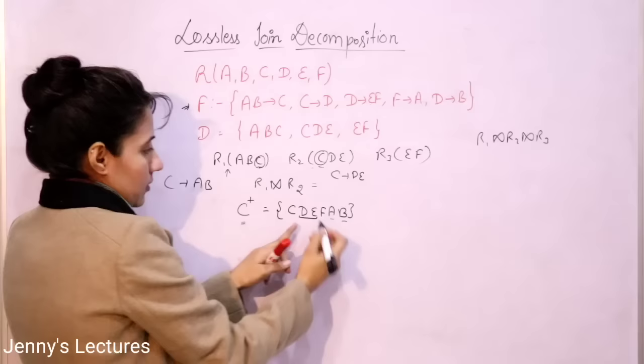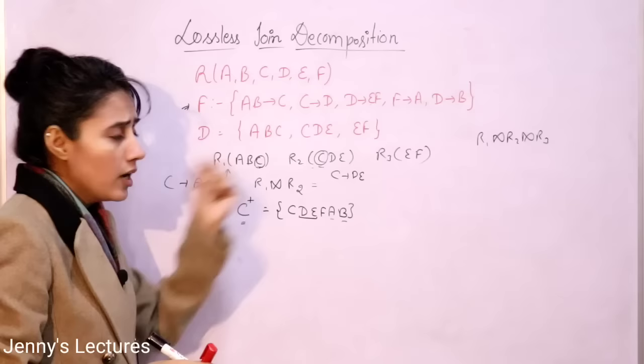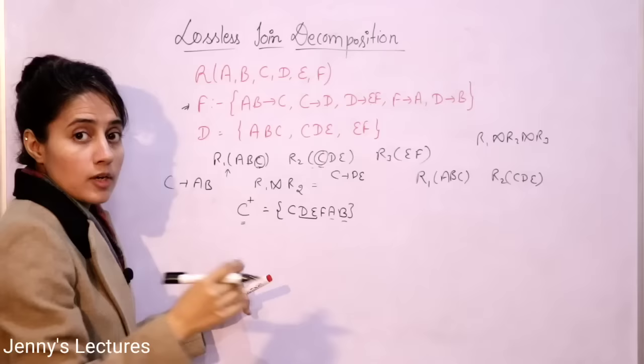Using C I can also drive both D and E, so C is a candidate key for R2 as well. C is the candidate key — or equivalently, a super key — for both R1 and R2. Therefore, the R1 natural join R2 is a lossless join decomposition. But we are not done yet.